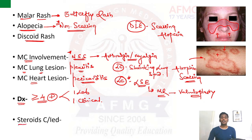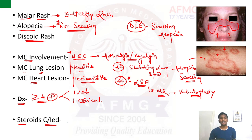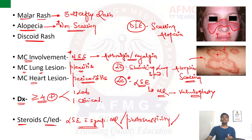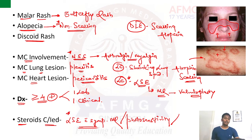The drug of choice for SLE is steroids. However, steroids are avoided or contraindicated in certain conditions: Libman-Sacks endocarditis with symptomatic valvular regurgitation (valvuloplasty preferred), photosensitivity, and SLE in pregnancy. In pregnancy, placental enzymes deactivate steroids, making them ineffective. Therefore, in SLE in pregnancy, a DMARD like hydroxychloroquine is generally preferred.